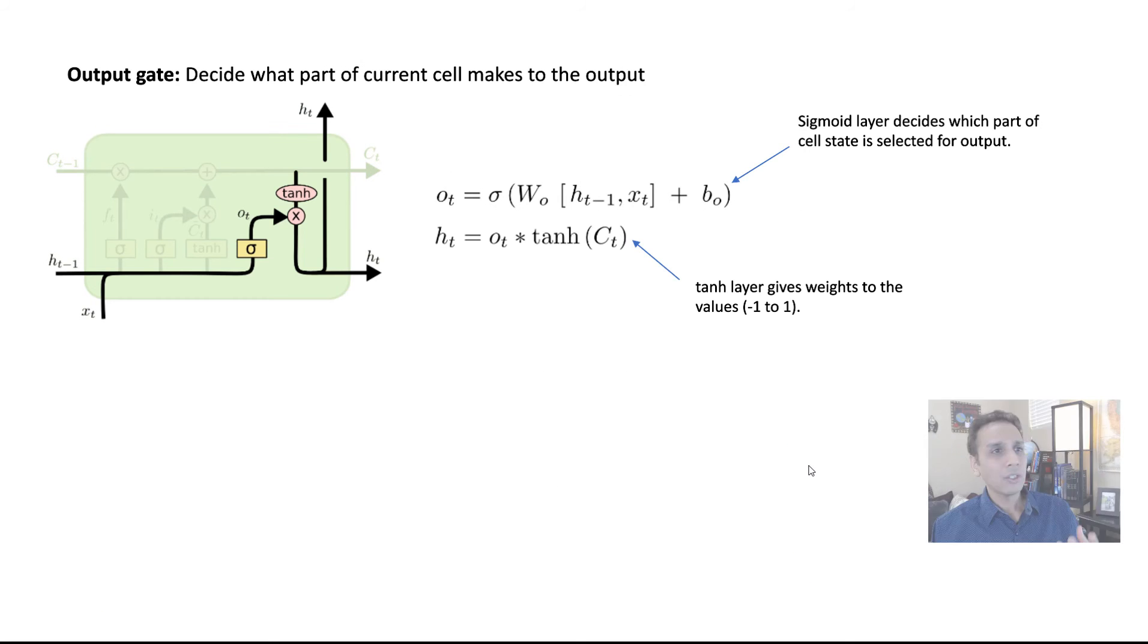And moving on to the output gate, which is the last one down here. Again, it has a sigmoid right there. And the sigmoid decides which part is selected for the output. That's what sigmoid is. And the tanh gives, as usual, the weights. The tanh right there gives the weights to this incoming values. And then a multiplication operation right there, and that's what's output that you get as an output right there.